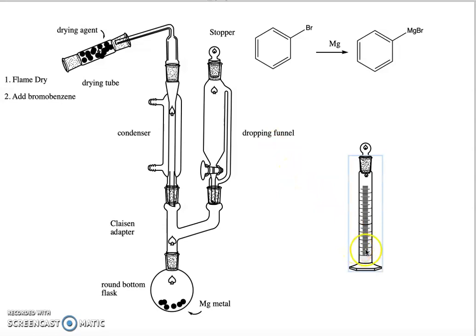Then we're going to bring it over to our glassware, which is also still stoppered. As quickly as possible, we remove the stopper from the dropping funnel and the stopper from the graduated cylinder with the bromobenzene, and we add the bromobenzene to the dropping funnel.